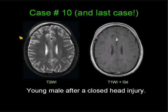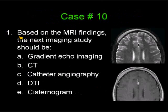Let's go on to the first question. Based on the MR imaging findings — I'm showing you the same two images on your right — the next imaging study should be: A, a gradient echo MR imaging study; B, a CT; C, a catheter angiogram; D, a diffusion tensor imaging study; or E, a cisternogram. Which one do you think should be the next imaging study?